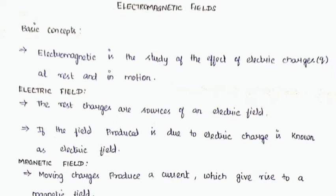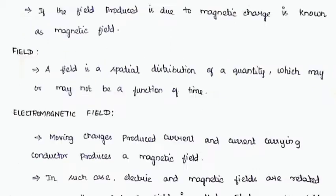What is magnetic field? Moving charges produce a current. As we all know, the flow of electrons is known as current, which gives rise to a magnetic field. Just as rest charges can induce an electric field, likewise moving charges can induce a magnetic field. The field produced due to moving charges is known as the magnetic field.